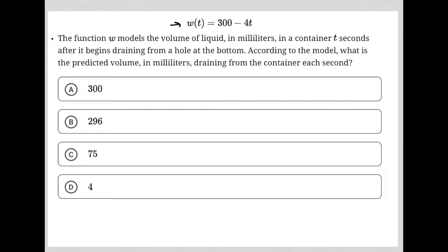Well, we were told that T goes with seconds. We have T seconds. So I have to pay attention to this number, this negative 4, in front of the T because I think that at zero seconds, if T were zero, we'd have 300 milliliters. But as soon as T becomes one second, we add a second.